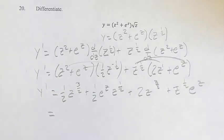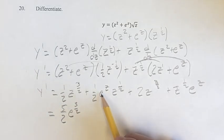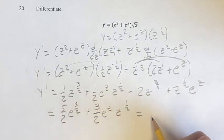So, adding like terms, we have z to the three-halves and z to the three-halves, so we can add their coefficients. So one-half plus two is five-halves z to the three-halves. And then we have z to the one-half e to the z. And we have one of them and then another half, so that's plus three-halves e to the z, z to the one-half power. This is your derivative.